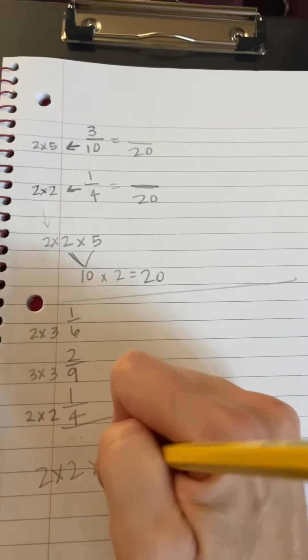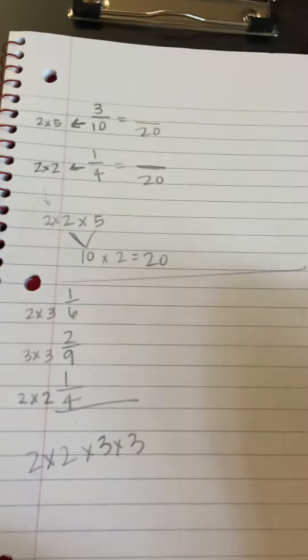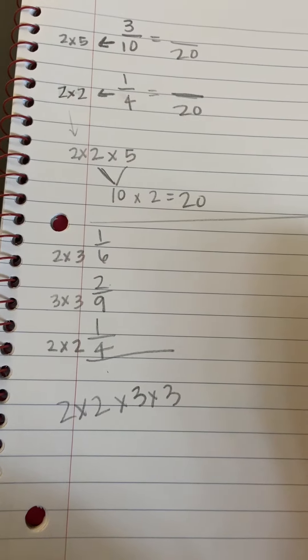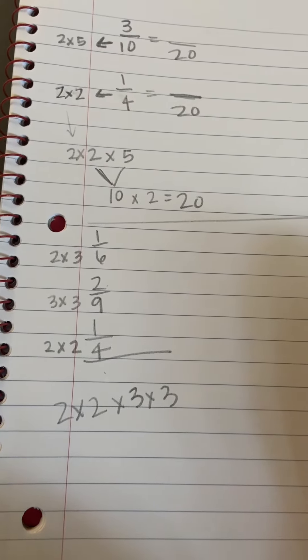Now I'm going to multiply those together. I'm going to multiply it this way. First, look for a ten. We do not have both a two and a five, so we do not have a ten.